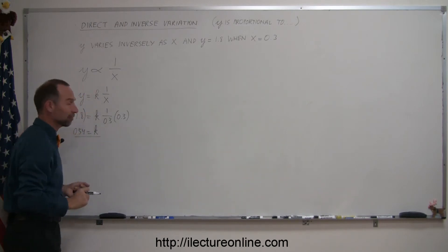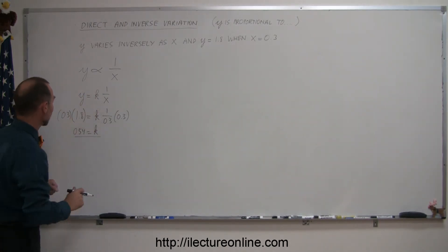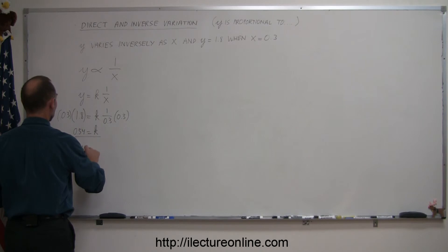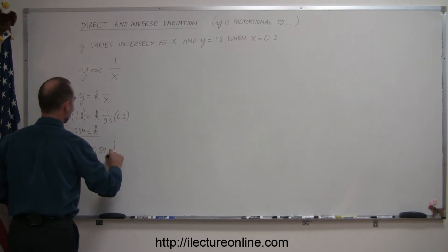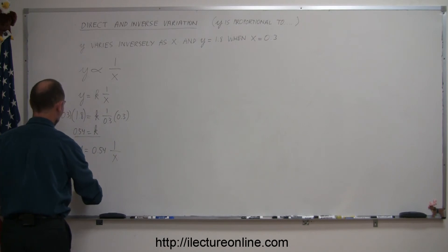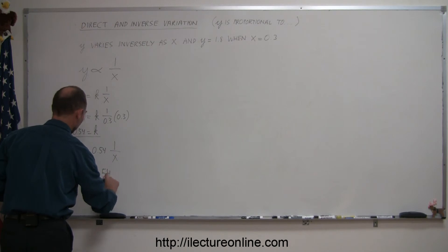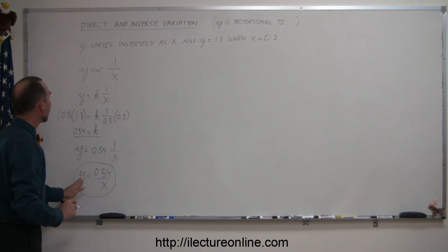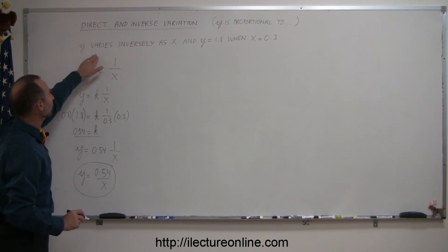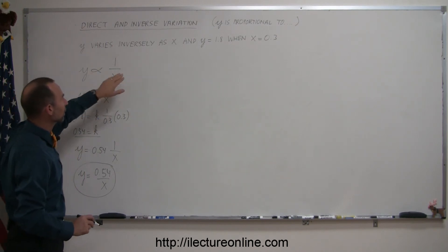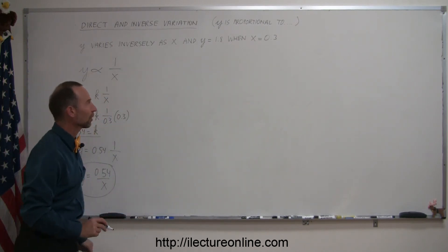So now we have the proper value for k. We can plug that back into our equation and so we have y is equal to 0.54 times 1 over x, or simply written, y is equal to 0.54 over x. And that's the equation that relates the variable x to the variable y given the inverse variation with the particular values for x and y.